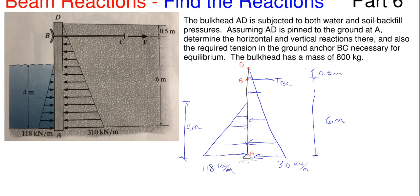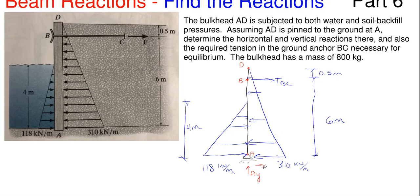We have our reactions at point A. I'll assume A_y is upward and A_x is in the same direction as the tension anchor, assuming the soil pressure is overpowering the water pressure. Lastly, we cannot forget we have a mass of 800 kilograms, which will act downward at the centroid of the bulkhead. It doesn't really matter where vertically you place it, as you will see.